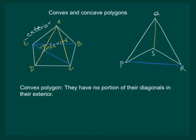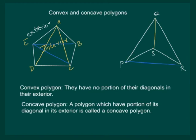Hence, we can say that PQRS is not a convex polygon. And we define a concave polygon as a polygon which has a portion of its diagonal in its exterior.